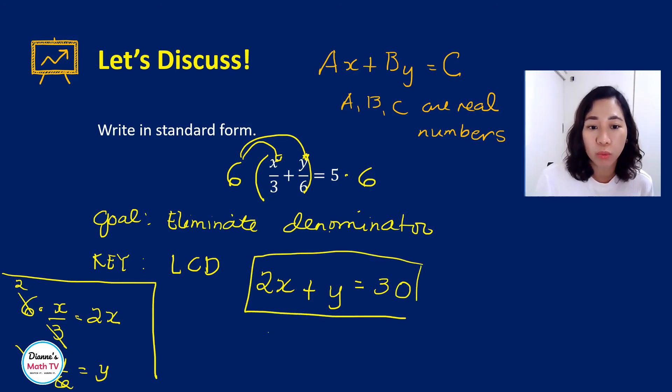Your a is 2. Your b is 1. Remember, if there's no coefficient there, that is a 1. And your c is 30.